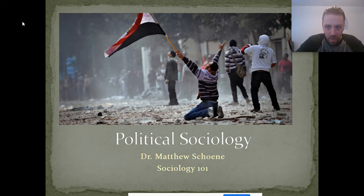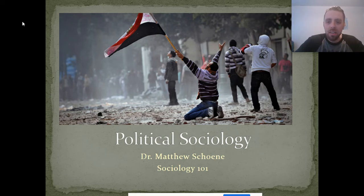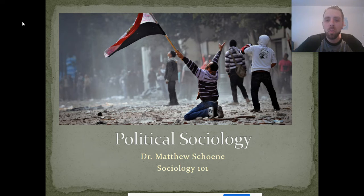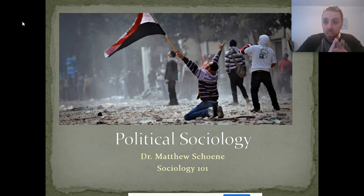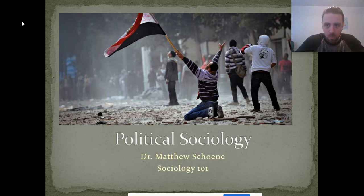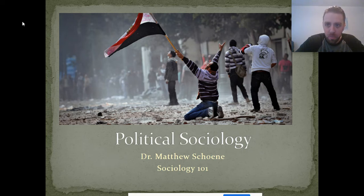Political sociology is an interesting topic because there's some very clear overlap between political sociology and political science. From my reading of the literature, the big difference is that political science tends to focus on the operation of political systems, whereas political sociology looks at the determinants of certain political systems — what conditions give rise to various types of governments and what are the outcomes of having a certain type of political system.